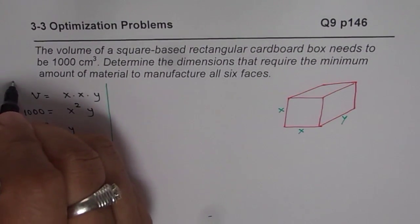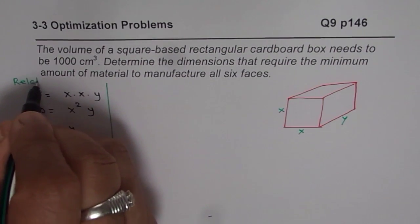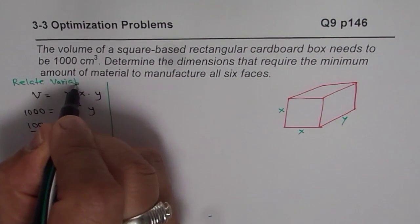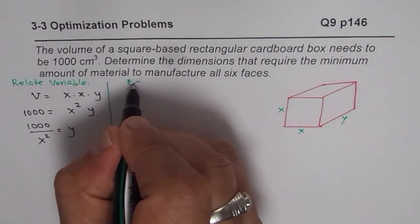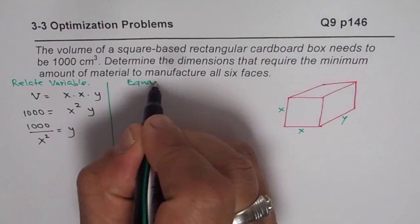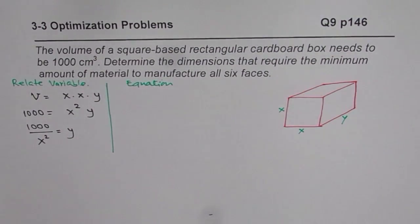So we relate variables. Now, second part is to find equation in one variable. So we have equation in one variable.